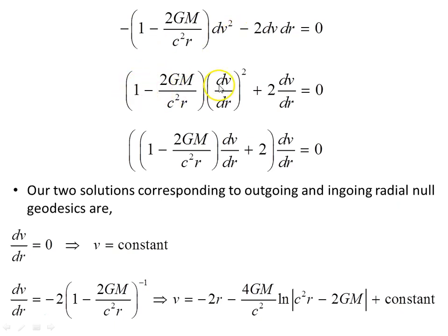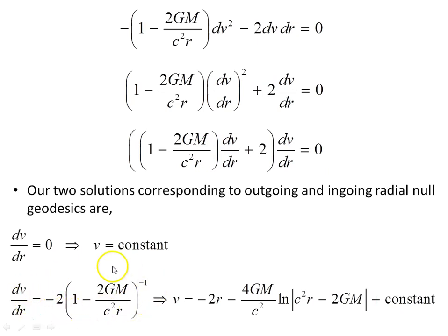Dividing through by dr squared and factoring out dV/dr, we apply the null factor law: the product equals zero gives two solutions. The first is dV/dr equals 0 — no surprise, since we started with V equals a constant. The second sets the bracket to zero; taking the 2 to the other side and solving this first-order ODE gives V equals minus 2r minus this logarithmic object. It's a straightforward integration you can do by hand.